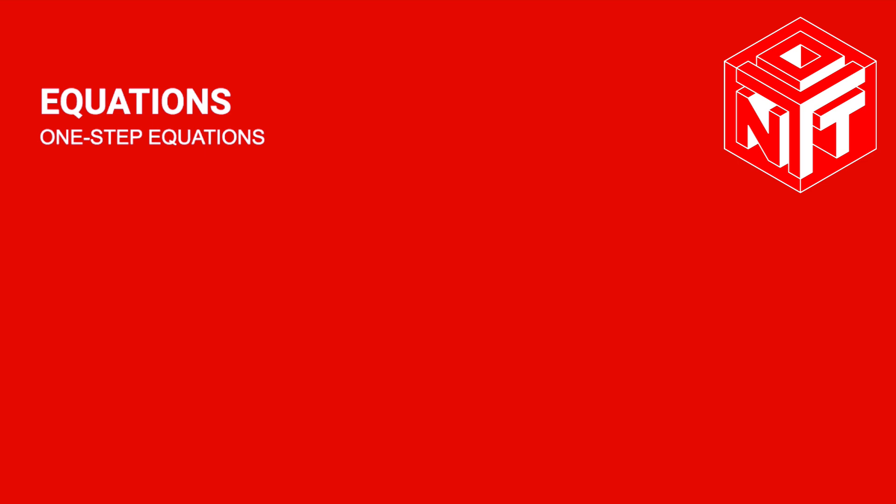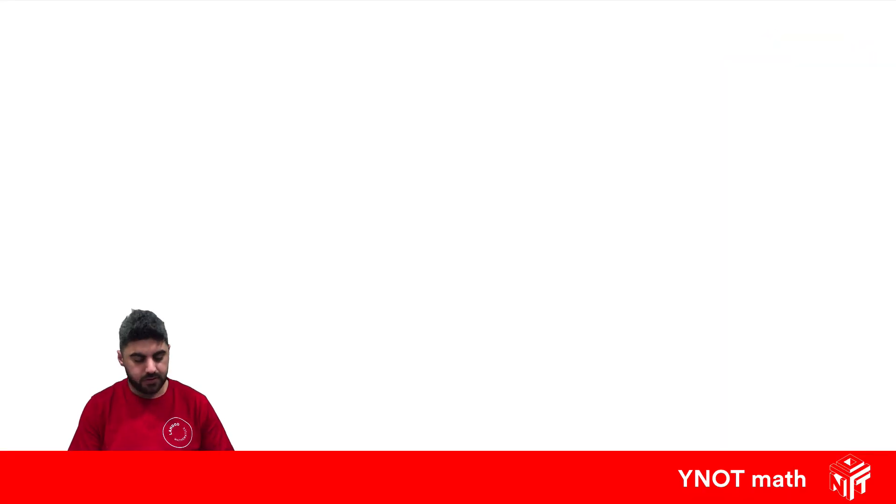One-step equations. Remember from our last video, an equation is something we can solve for the pronumeral. In this case, we'll be able to solve it, and to do that we need those opposite operations to get the pronumeral on its own in an equation.